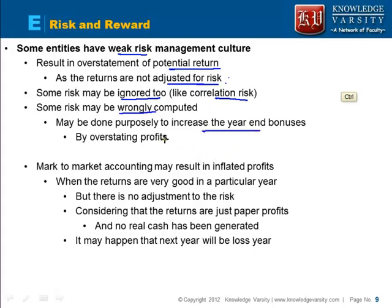Companies may do this so they can get more bonus at the end of the year. Also, mark-to-market accounting may result in inflated profits. Think about when in a particular year the returns are very good — in the future, the returns may be bad. When companies compute the mark-to-market return, they are not adjusting for the risk. These returns are actually just paper profits — no real cash has been generated — and the companies give out bonuses based on this paper profit.